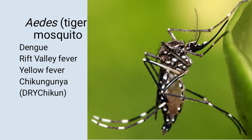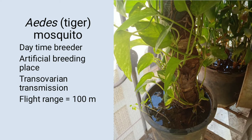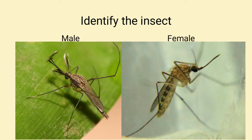Identify the insect: This is Aedes mosquito, or tiger mosquito. It has white stripes and transmits dengue fever, rift valley fever, yellow fever, and chikungunya. Mnemonic: DRYC — D for dengue, R for rift valley fever, Y for yellow fever, C for chikungunya. It is a daytime breeder; artificial breeding places include water in pots. There is trans-ovarian transmission; flight range is 100 meters.